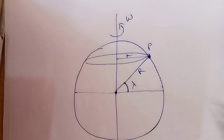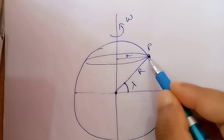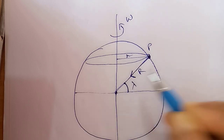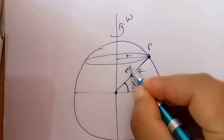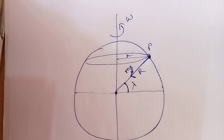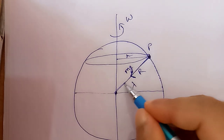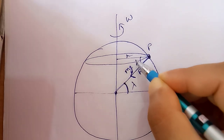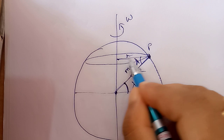The weight of the particle acts along this direction, towards the center of the Earth. The weight mg always acts towards the center of the Earth — not simply in the vertically downward direction — because the Earth is round. Since this angle is lambda, this angle will also be lambda as an alternate angle, because these two lines are parallel.